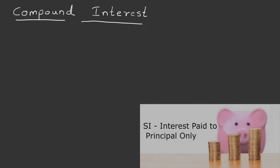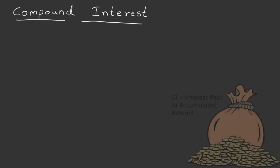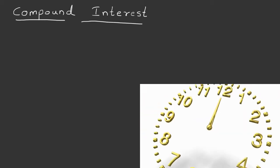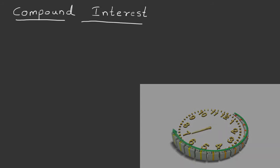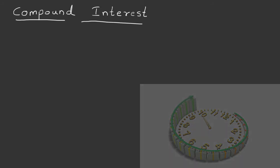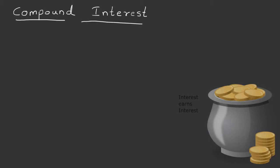In simple interest, interest is paid only to the principal amount. But in compound interest, interest is paid to the accumulated amount of the previous period. That is, amount after the first period becomes principal for the second period, amount after the second period becomes principal for the third period, and so on. In other words, in compound interest, interest itself earns interest.